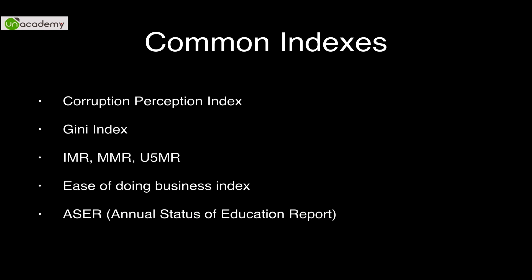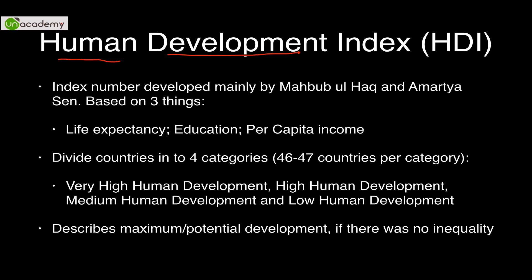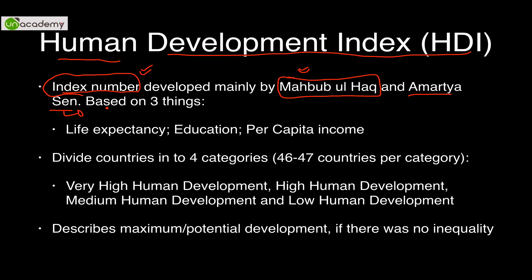The Human Development Index is an index number, meaning certain parameters are used to develop a number. It was developed mainly by Mahbub ul Haq, a renowned Pakistani economist, along with Amartya Sen, an Indian economist and Nobel laureate. It is based on three things: life expectancy, education, and income — income measured in purchasing power parity terms. A simple mnemonic: HDI is a LIE — Life expectancy, Income, and Education.